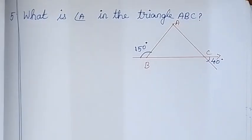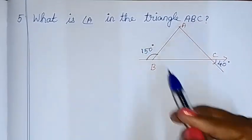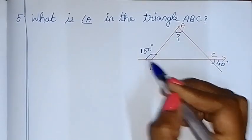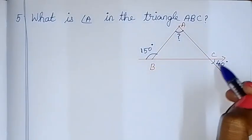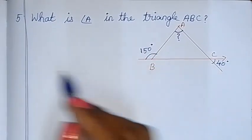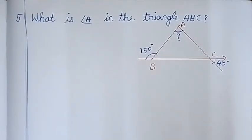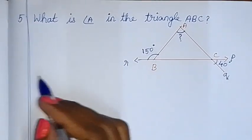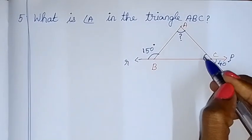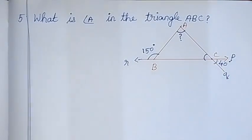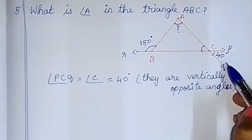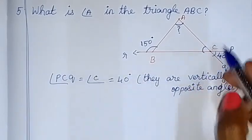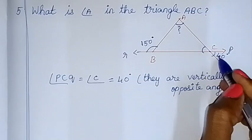What is Angle A in the triangle ABC? So in the triangle ABC, we look at the angle value. Here, Angle B is an exterior angle of 40 degrees. Using the triangle properties, with points P, Q and R — Angle C is equal because they are vertically opposite angles. Here is Angle P, C, Q — so Angle C is equal to 40 degrees.